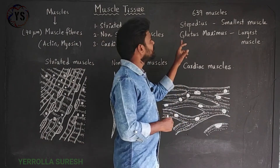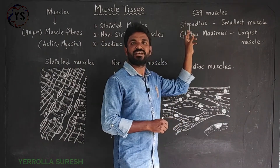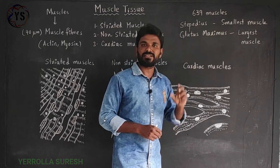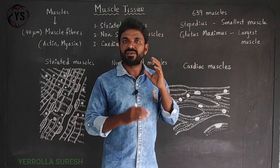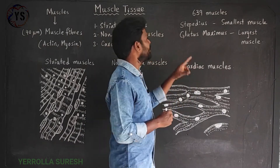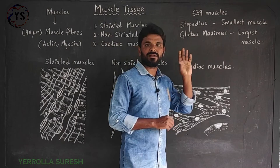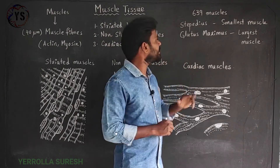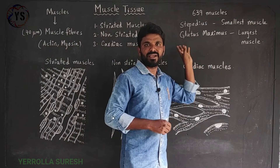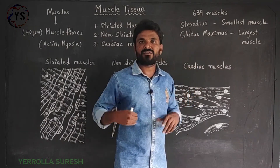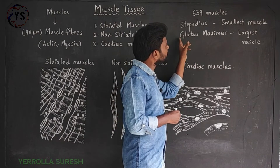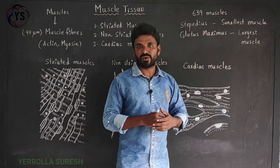Out of the 639 muscles, the smallest muscle in the body is the stapedius, which is located inside the ear, nearby the bones present in the ear. The largest and biggest muscle in our body is the gluteus maximus, which is located on the back side of the thigh.